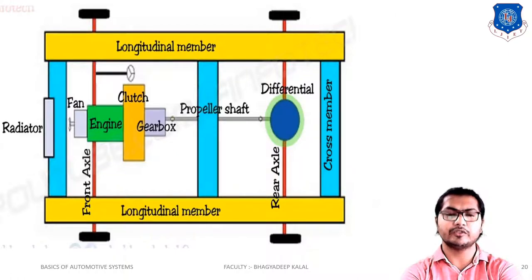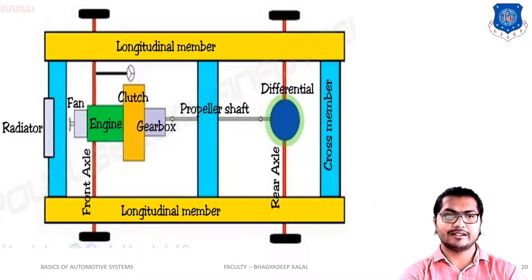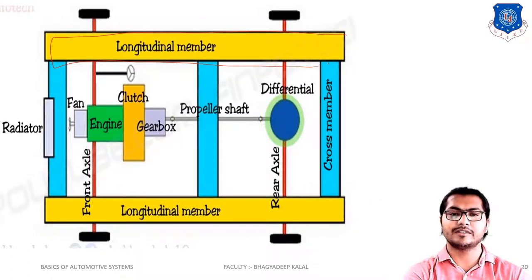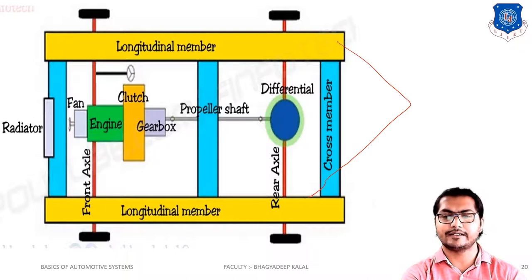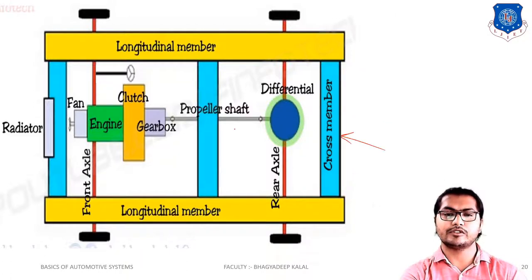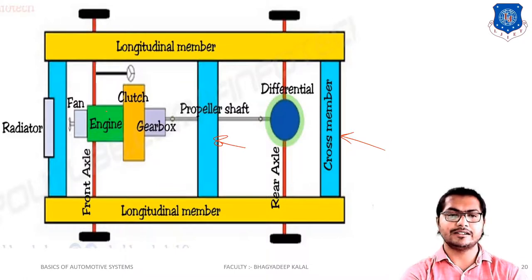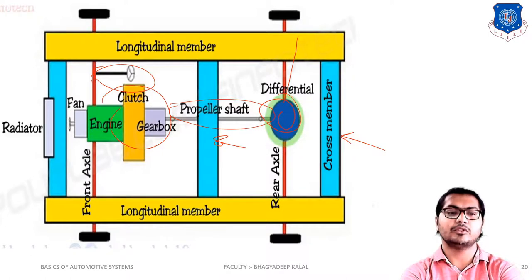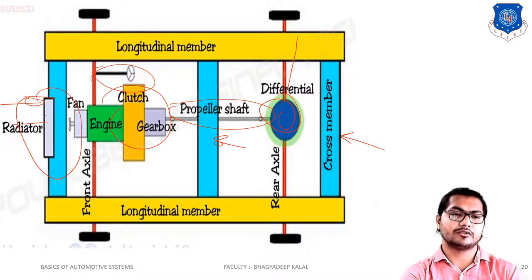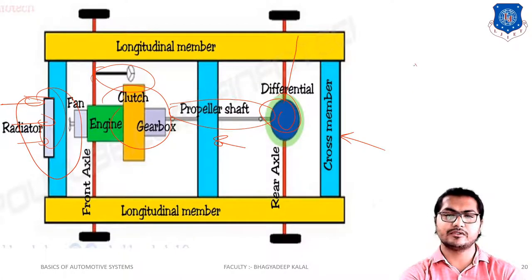This is the diagram of front engine rear wheel drive for exam purposes. The longitudinal members, also called side members, run along the chassis. Cross members support the engine, clutch, gearbox, and steering mechanism. The propeller shaft and differential transmit power to the rear wheels. The radiator is mounted at the front so that natural airflow directly contacts it, reducing fan power losses.